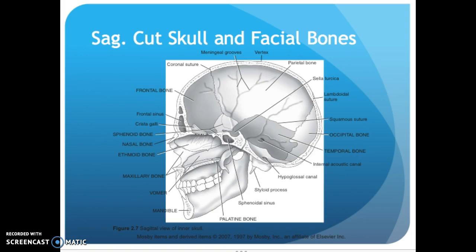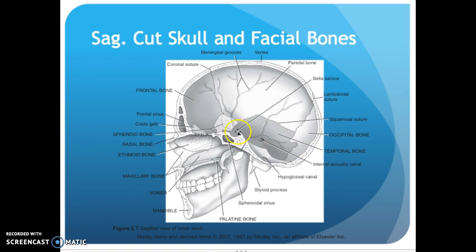This is a great picture — it's a sagittal cut down the middle so you can see the inside of the skull. All these little grooves you'll see on our models in the classroom and on MRI — they're meningeal grooves, so there are vessels within those. Vertex is the top. Here's your parietal bone, sella turcica, lambdoidal suture, and your squamosal suture here, occipital bone, temporal bone — highlighted for you so it's easier to see. On the inside is your internal acoustic meatus; on the outside is your external acoustic meatus.